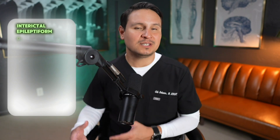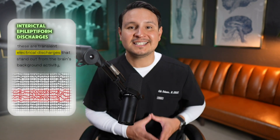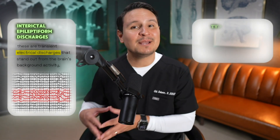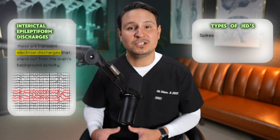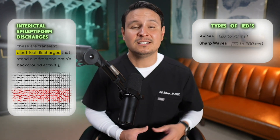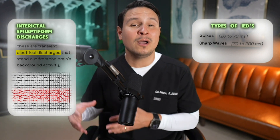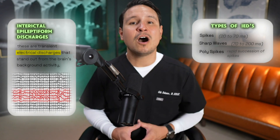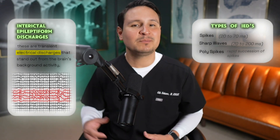Let's go over the three crucial points one more time. Number one: Interictal Epileptiform Discharges, or IEDs, are transient electrical discharges that stand out from the brain's background activity. Number two, types of IEDs: spikes with a duration of 20 to 70 milliseconds, sharp waves with a duration of 70 to 200 milliseconds with a more blunted appearance, and polyspikes, which are a rapid succession of spikes often seen in specific epileptic conditions.